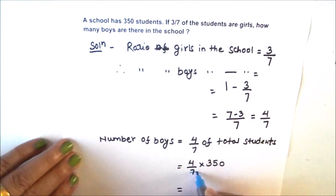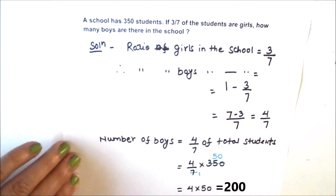So here we have 7 times 1 and 7 times 5 and 7 times 0. So 7 times 50 is 350. Numerator will be 4 times 50, and 4 times 50 is 200.